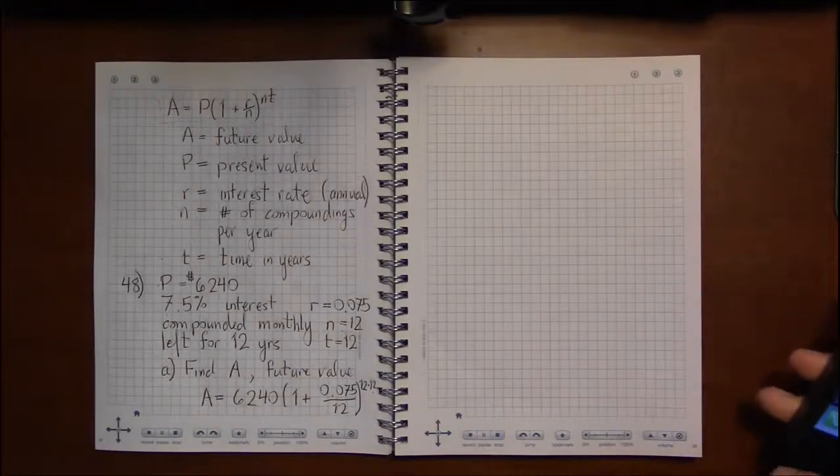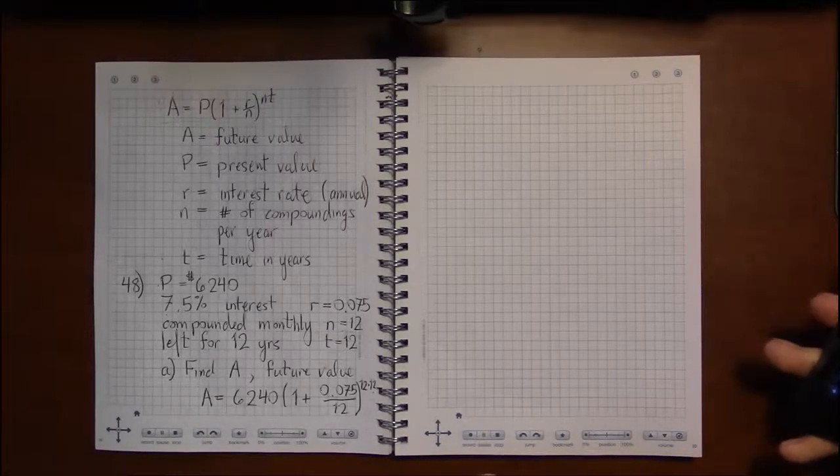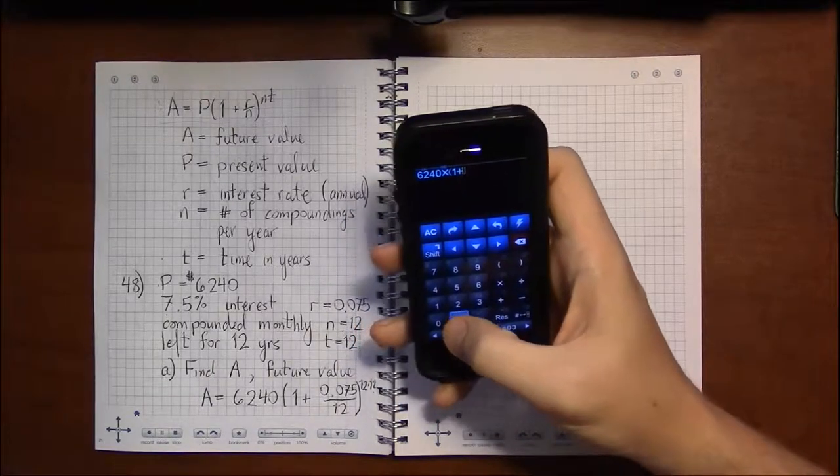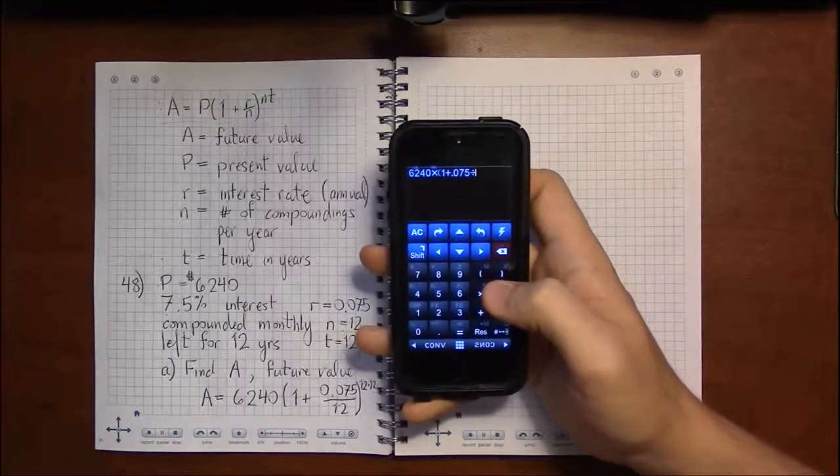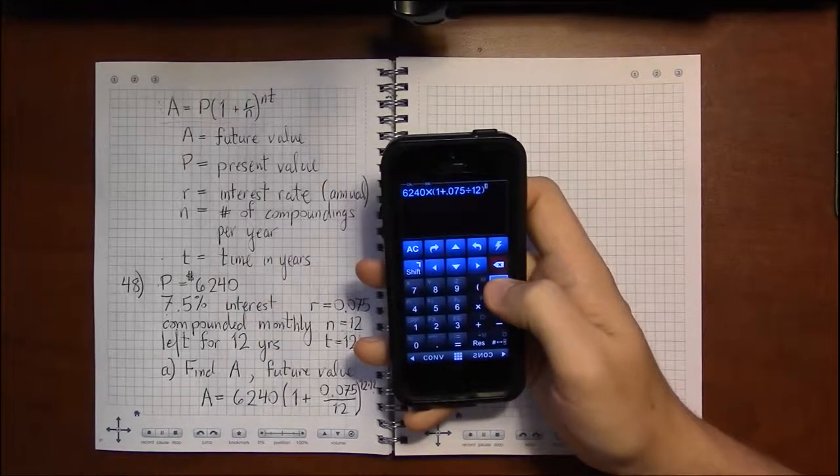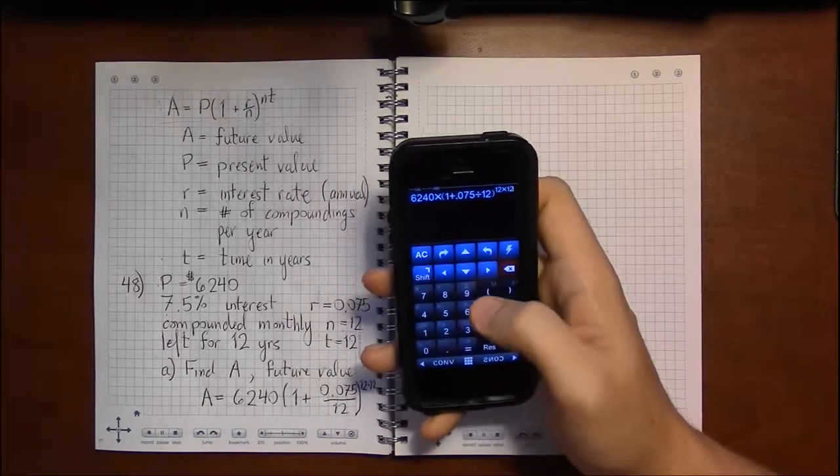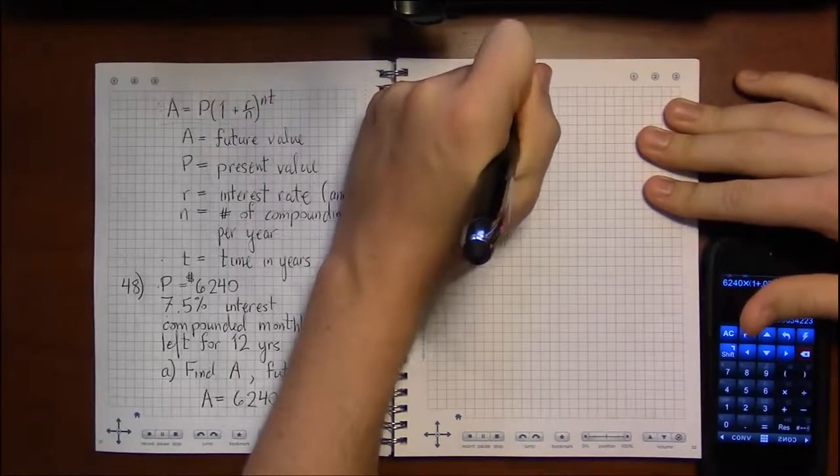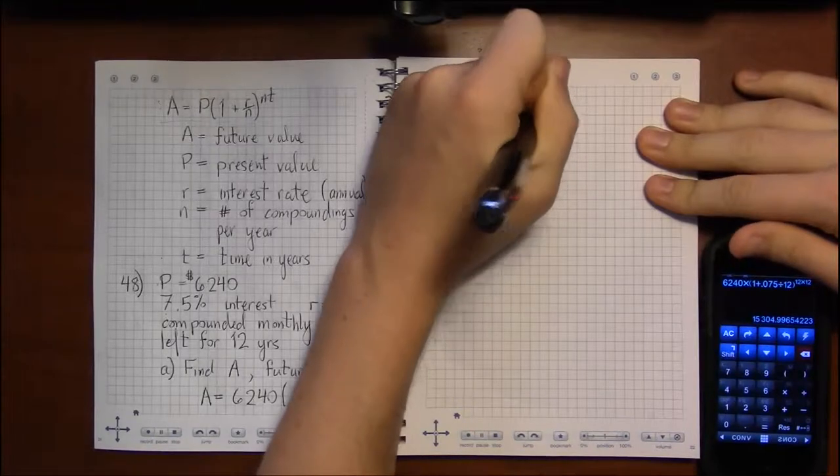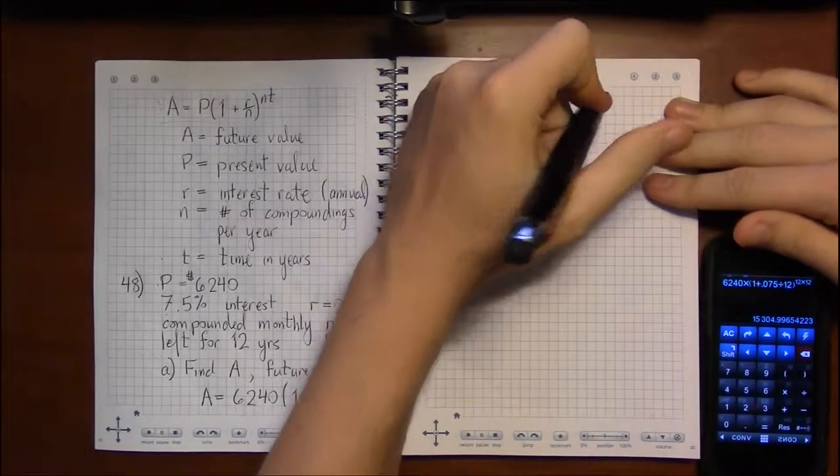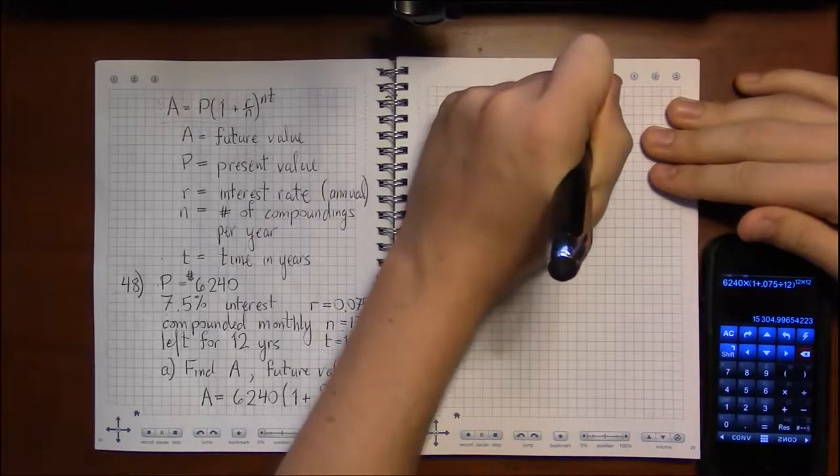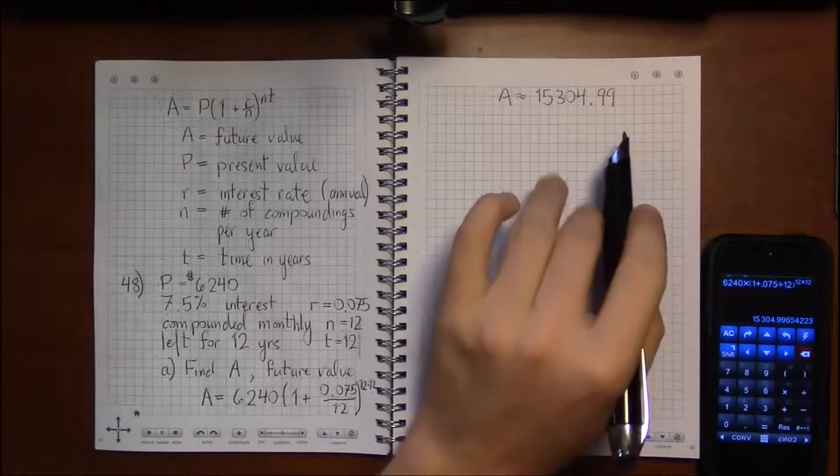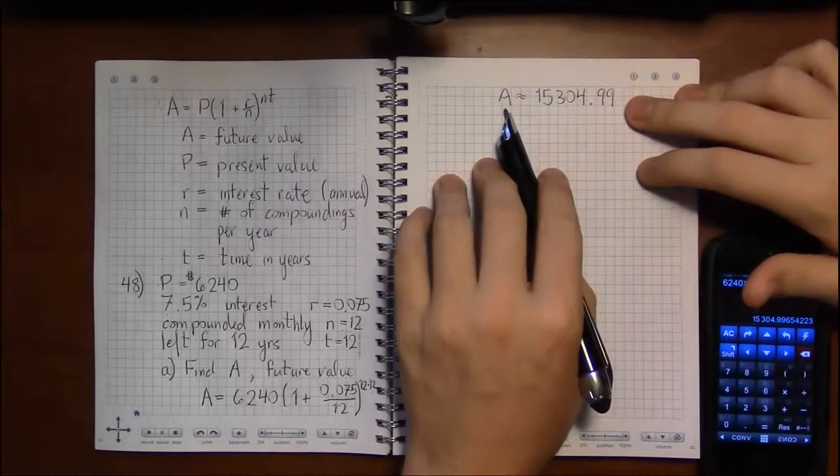So if we look at this, using my calculator off screen here, we have 6,240 times 1 plus 0.075 divided by 12, and then I'm going to raise that to the 12 times 12 power. So according to my calculator, that tells us that in 12 years, the account will have $15,304, and if we round down as a bank would, and 99 cents. So this is going to be the final amount. So this is our answer in Part A.